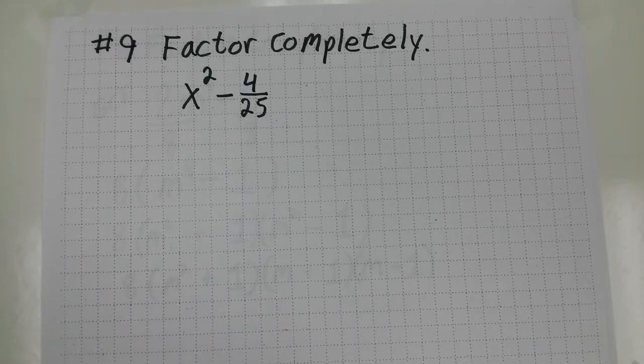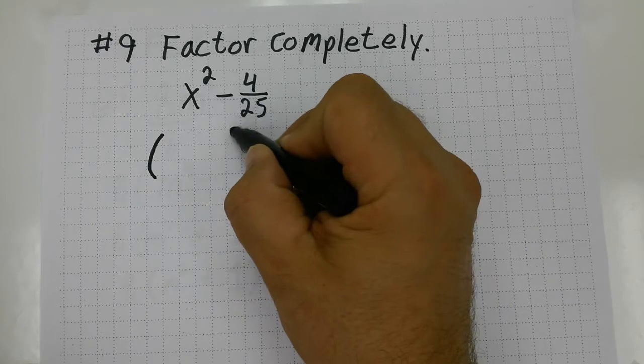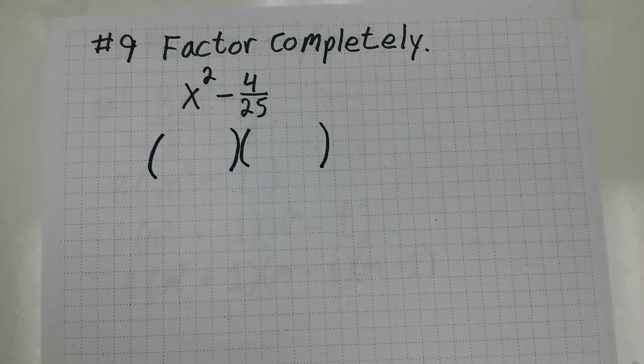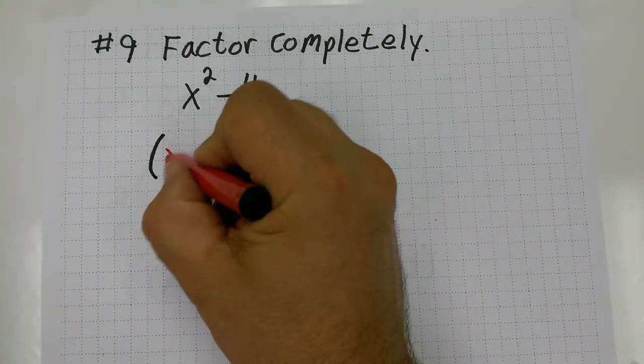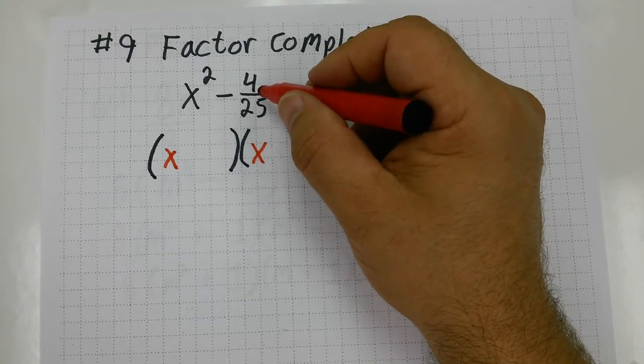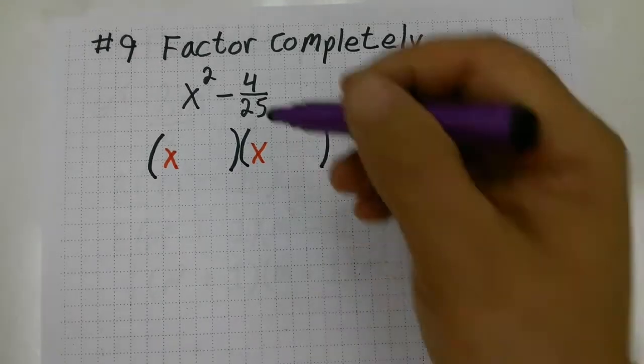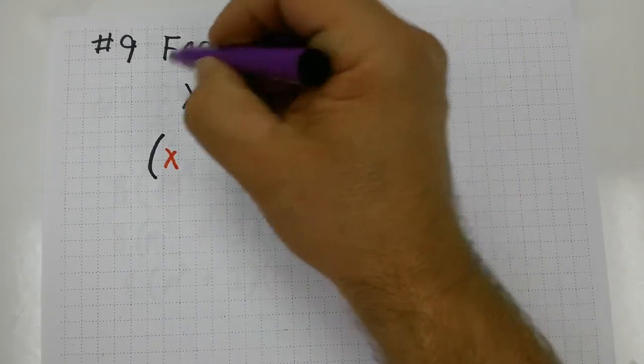x squared minus 4 over 25. So, what I'm going to do is set up my parenthesis template here and then figure out what times what equals x squared, so x times x equals x squared. Now what fraction times what fraction equals 4 over 25, and basically what you want to do is square root everything when you do a difference of perfect squares.